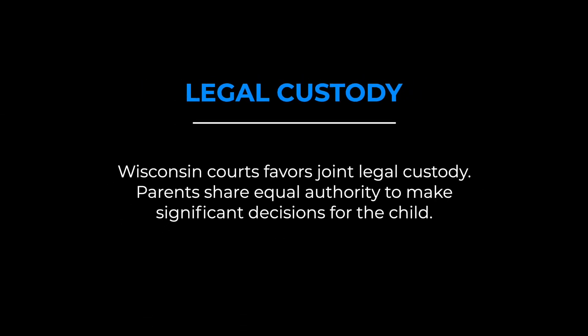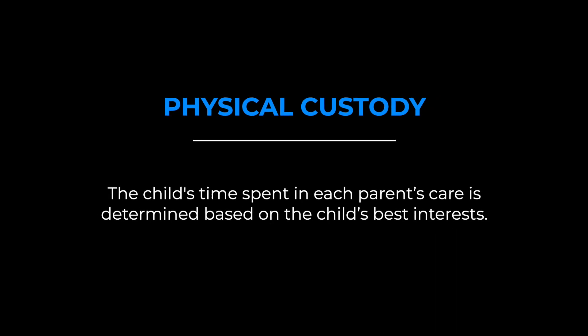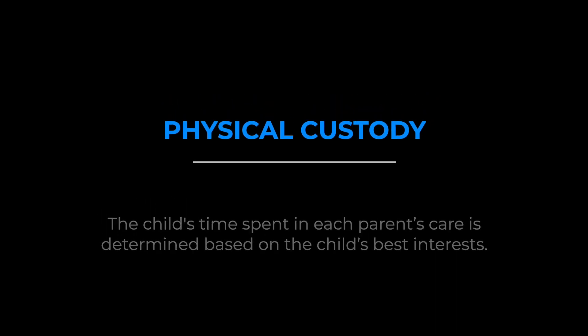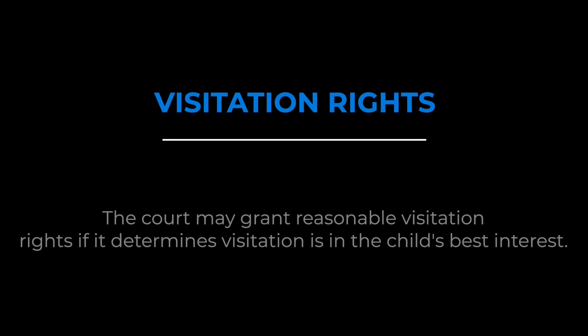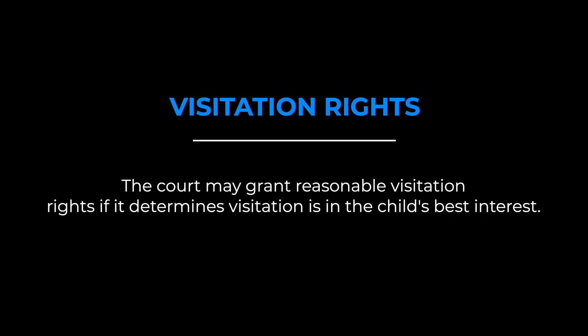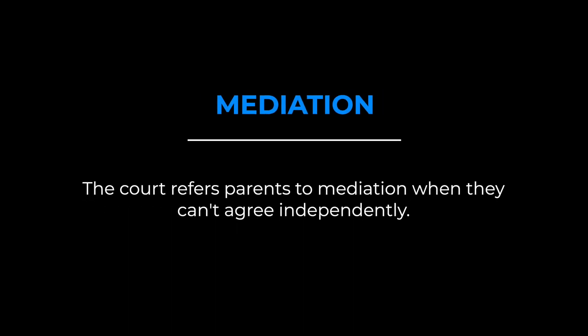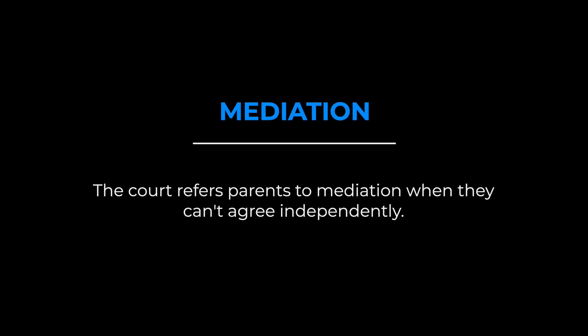First, let's review the basic terms to include in a Wisconsin custody agreement. Legal custody: Wisconsin courts favor joint legal custody, where parents share equal authority to make significant decisions for the child. Physical custody: the child's time spent in each parent's care is determined based on the child's best interests. Visitation rights: the court may grant reasonable visitation rights if it determines visitation is in the child's best interests. Mediation: the court refers parents to mediation when they can't agree independently.